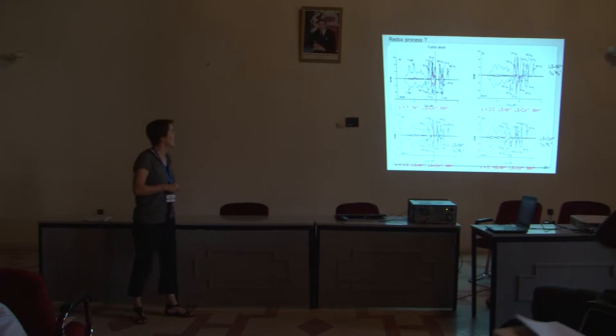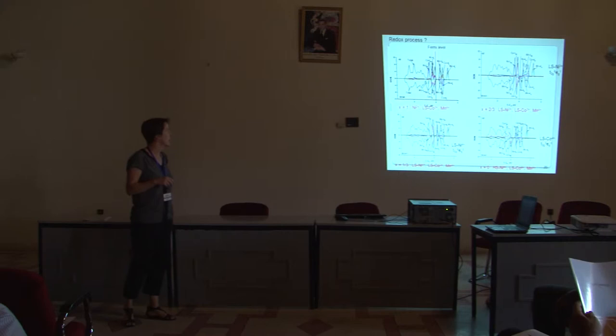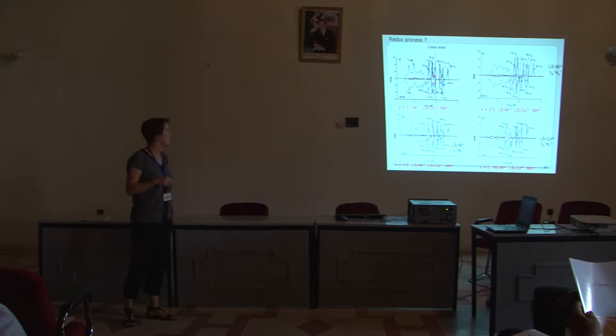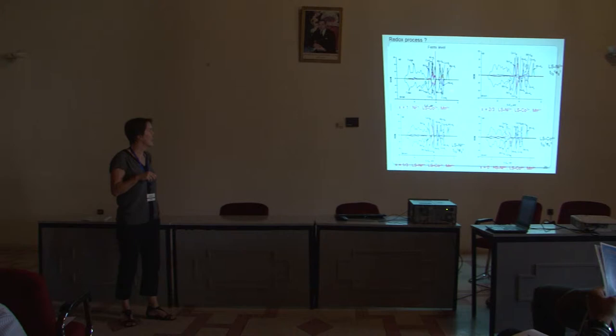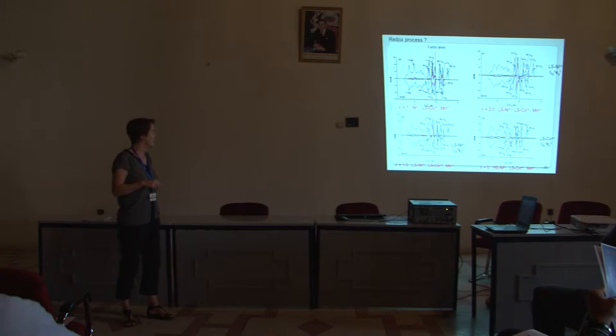Based on this analysis we can predict a low-spin cobalt 3+, nickel 2+, and manganese 4+ ion, which was further confirmed by XANES experiments with my colleague Bing-Joe Hwang in Taiwan. In order to predict and understand the redox process, we also computed the density of states for different lithium contents. For the initial phase then for lithium two-thirds, we see that we no longer have nickel 2+ but instead low-spin nickel 3+, so from x=1 to x=2/3 we oxidize nickel 2+ into nickel 3+. Then for lithium one-third we have low-spin nickel 4+, further oxidizing nickel 3+ into nickel 4+.